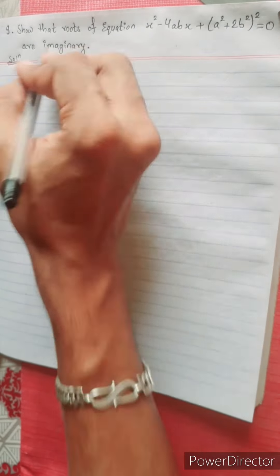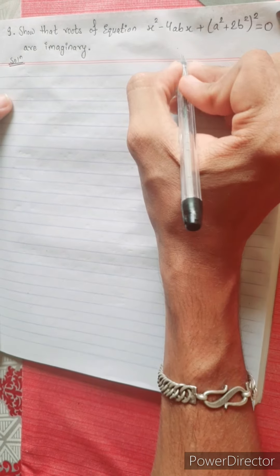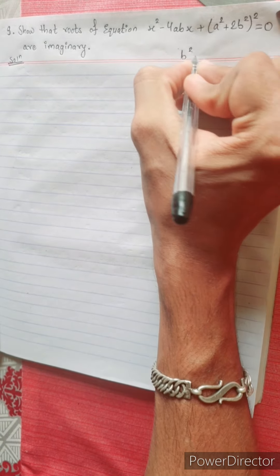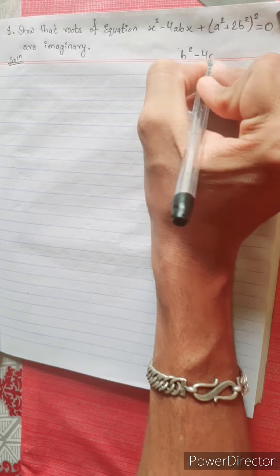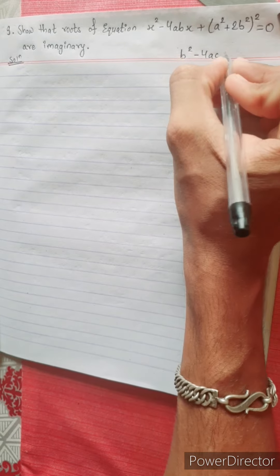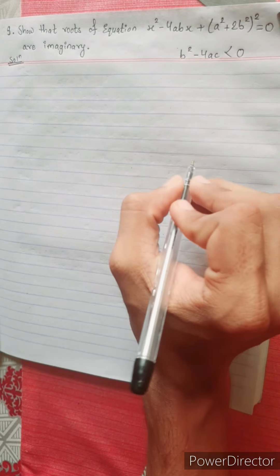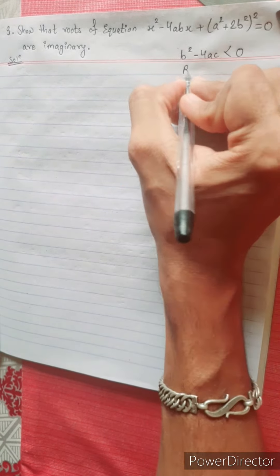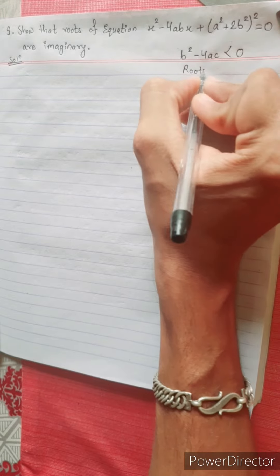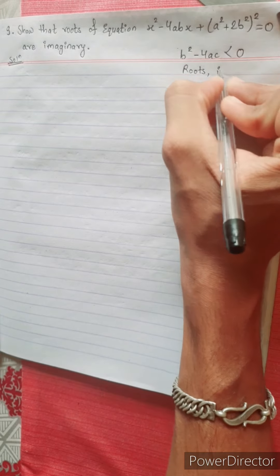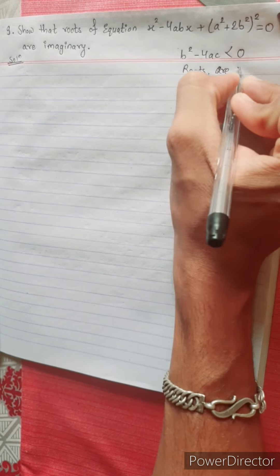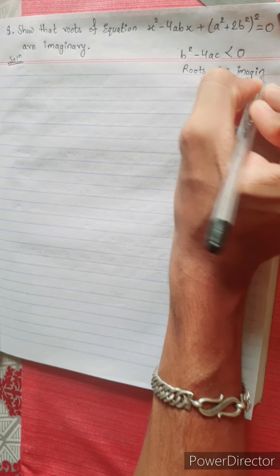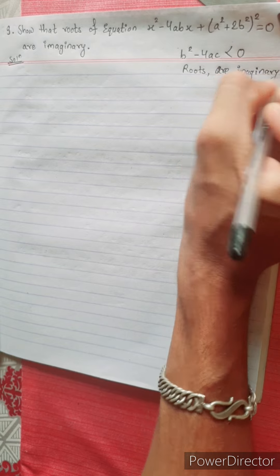This is the same thing — the imaginary condition: b squared minus 4ac is negative, less than 0. The roots are imaginary or equal — just imaginary.